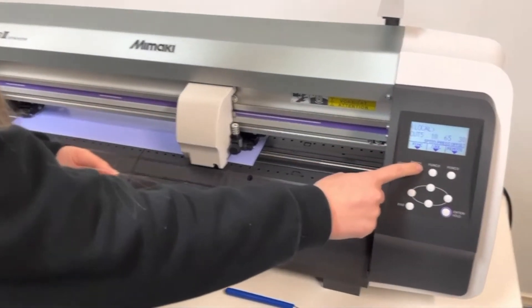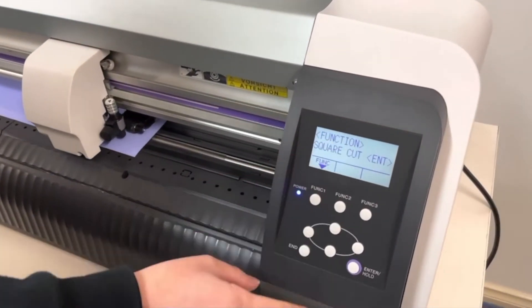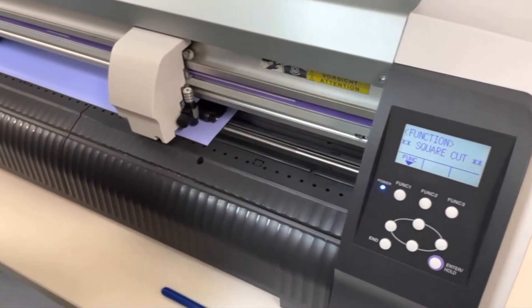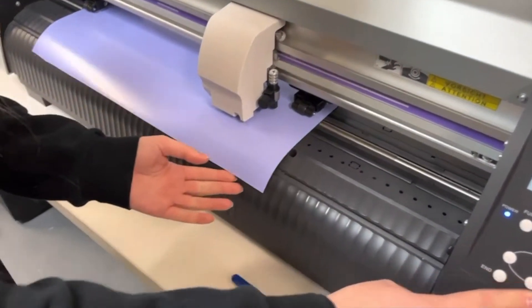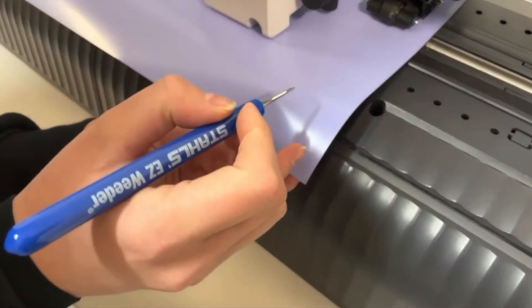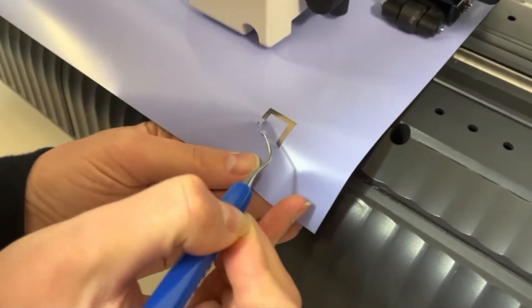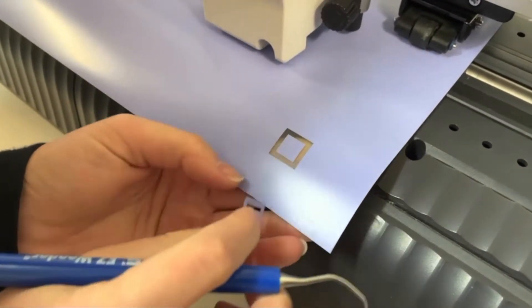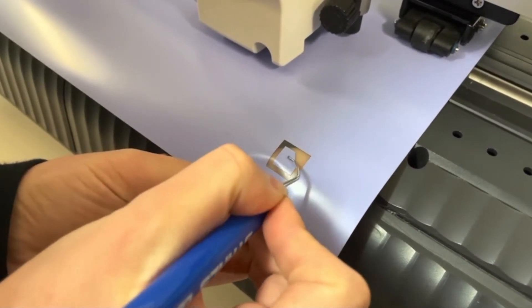But on the Mimaki here, we're just going to press the function and square cut button and press enter. I'm just going to roll it forward. Using my weeding tool, I'm going to find where that little square is cut and weed the outside and then again the inside there.